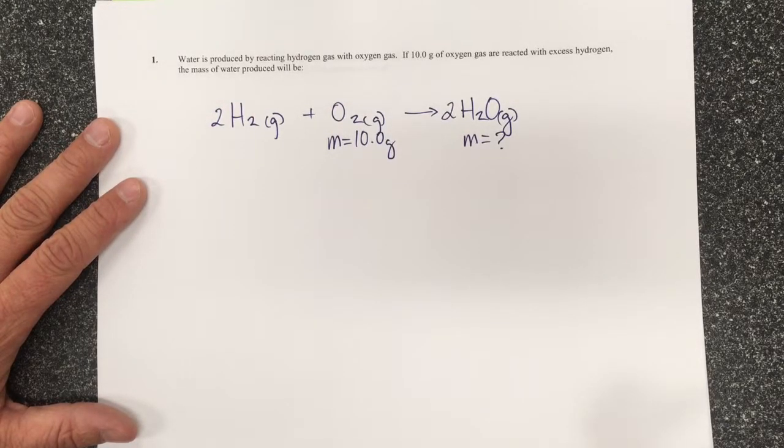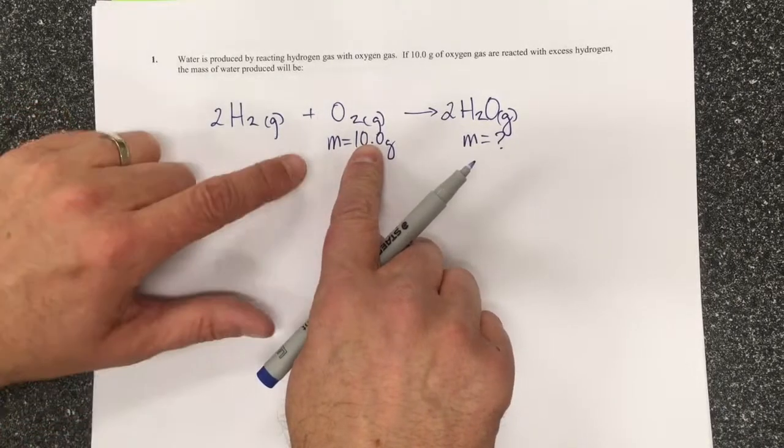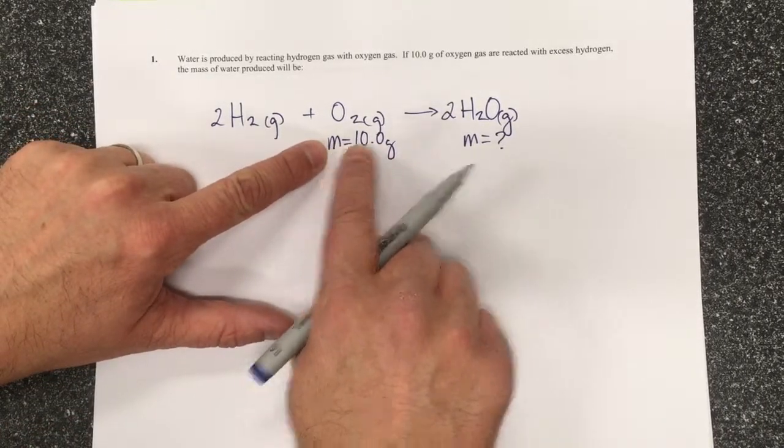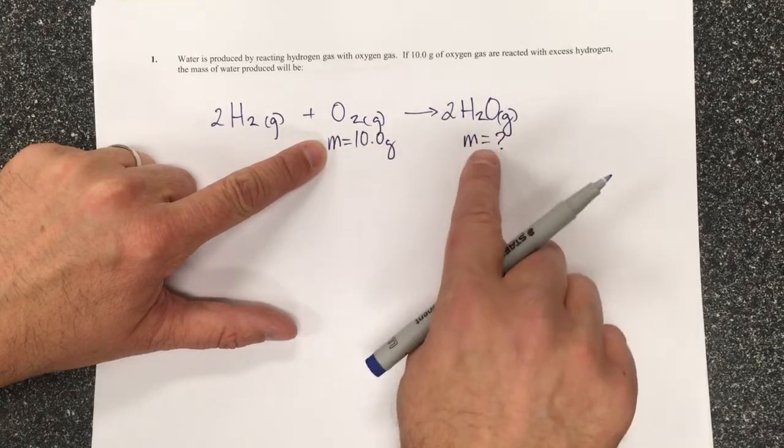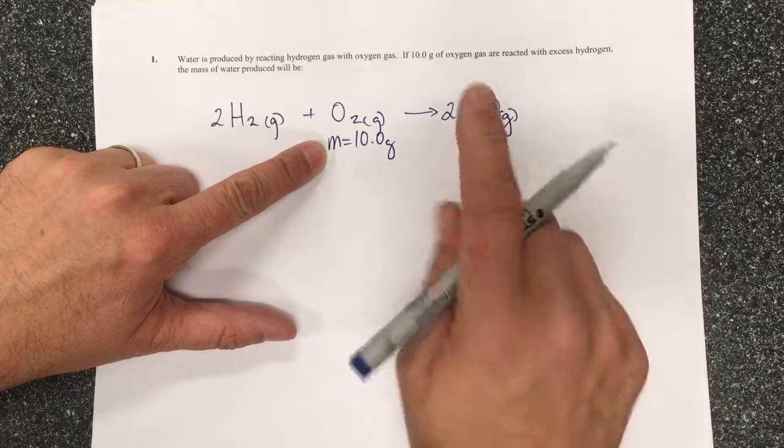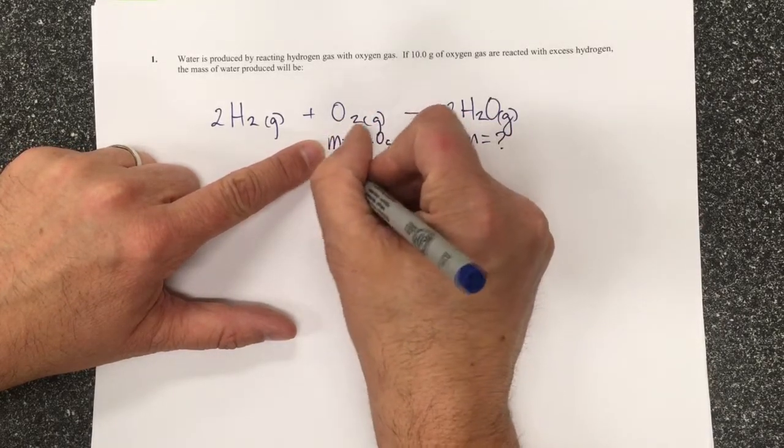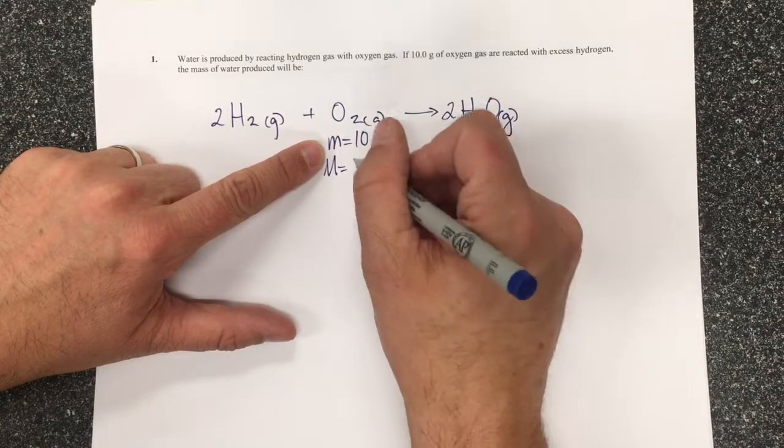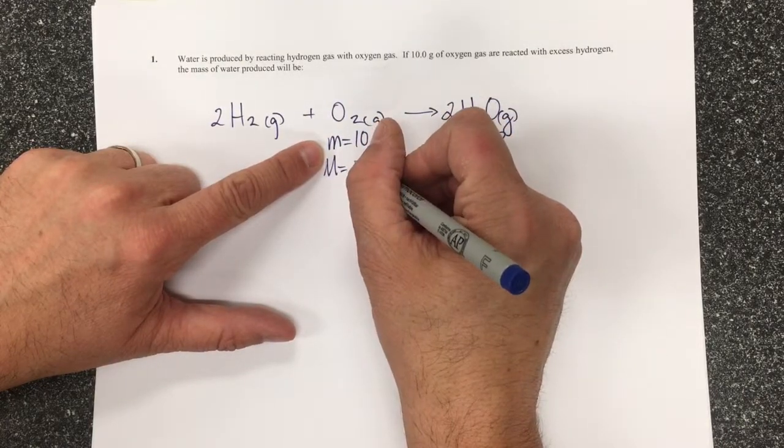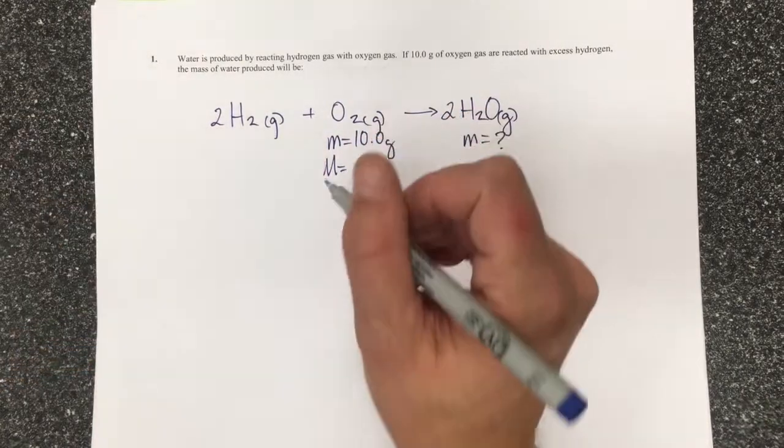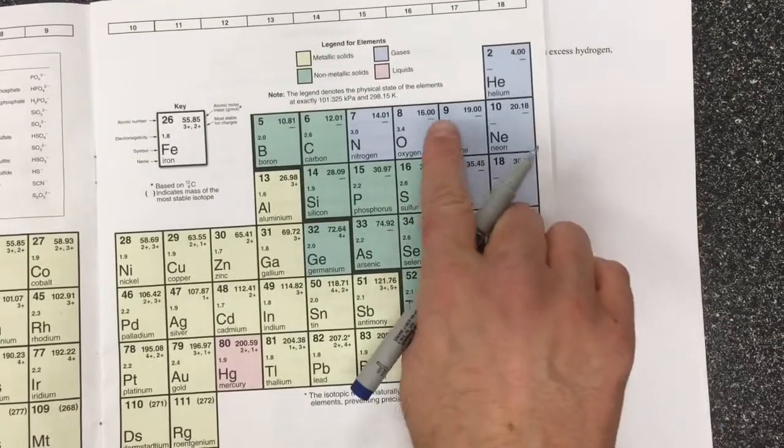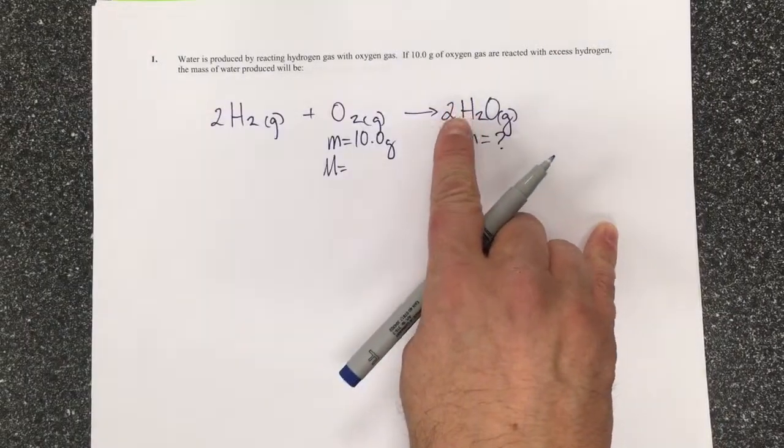The first step in any stoichiometry question is to balance your reaction. I've then organized that I know there are 10 grams of oxygen from the question and they want the mass of water. The molar mass of oxygen, because it has two oxygen atoms, is 2 times 16.00 grams because that's the atomic mass, so this is 32.00 grams per mole.